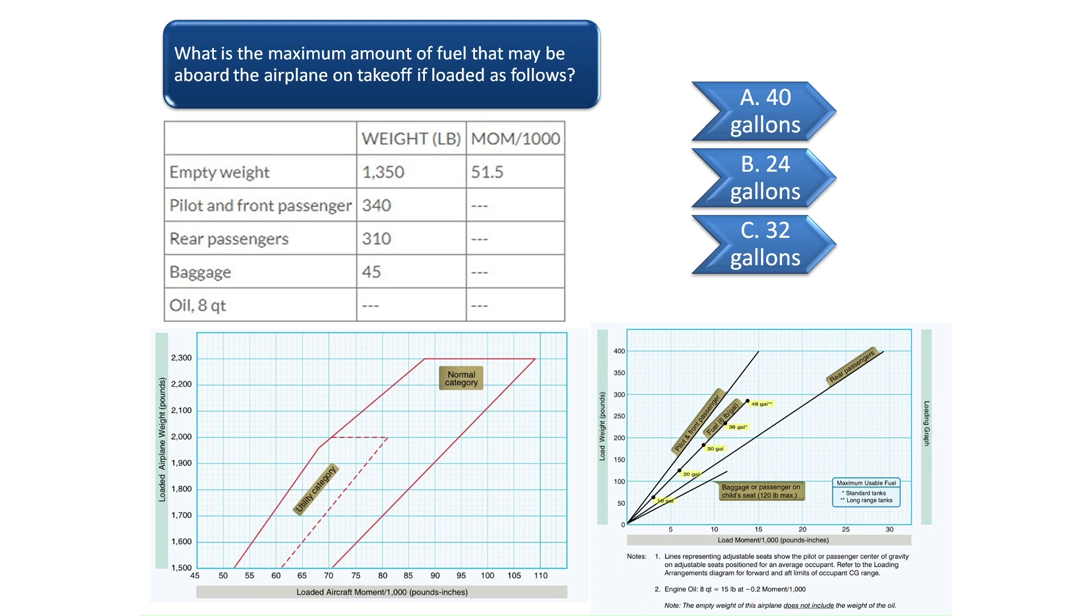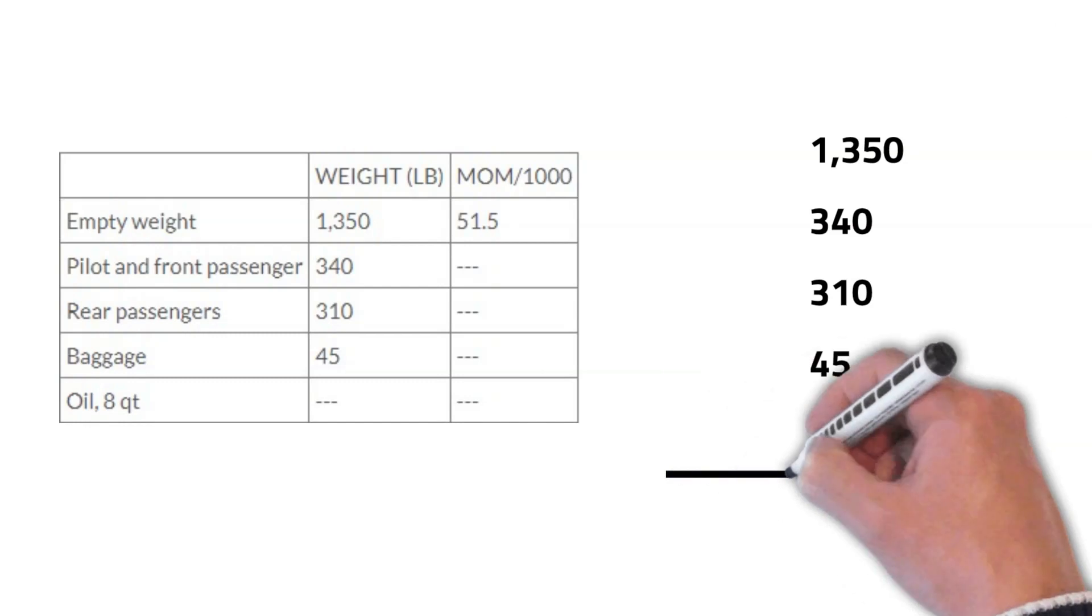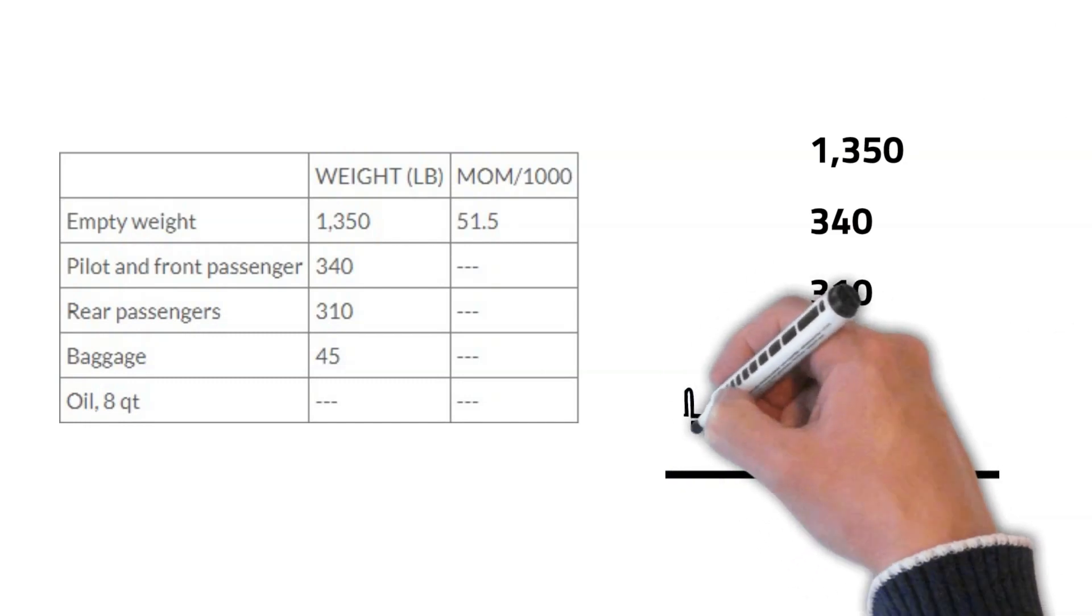To start, we need to add all the weights together as shown. After adding the weights together, we can see that the weight of the airplane is 2,060 pounds.